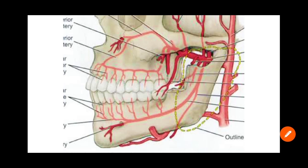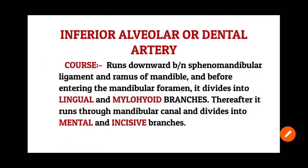I stands for inferior alveolar artery. It runs downward between the sphenomandibular ligament and the ramus of the mandible and enters the mandibular foramen. Before entering, it gives rise to two branches: the mylohyoid branch and the lingual branch. After entering, it passes through the mandibular canal, supplies the molars and premolars, then divides into the mental and incisive branches.